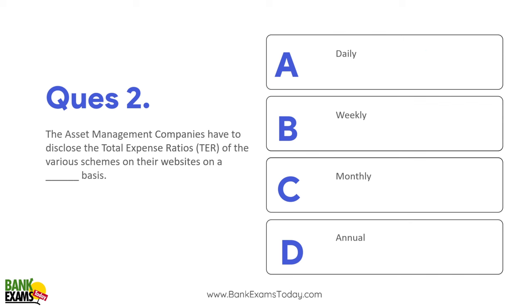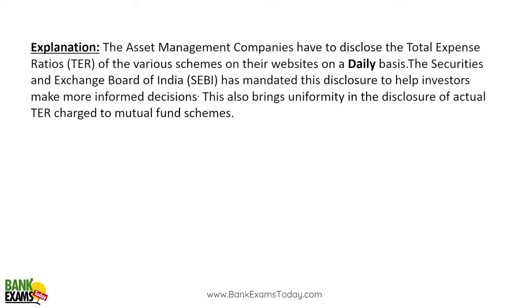The AMC — asset management company — has to disclose the TER (total expense ratio) of various schemes on their website on a daily basis. Daily NAV (net asset value) also has to be disclosed every day.